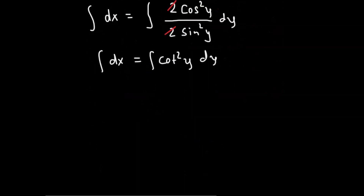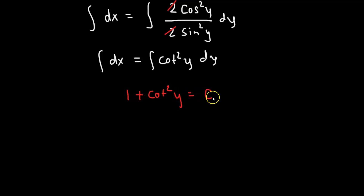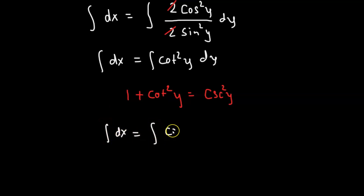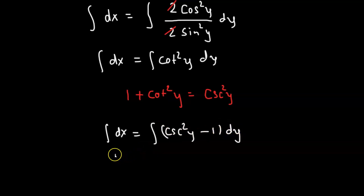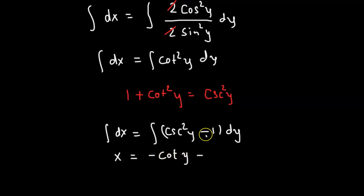Now we use the identity that 1 plus cotangent squared y equals cosecant squared y. So cotangent squared y equals cosecant squared y minus 1. That means we have the integral of dx equals the integral of cosecant squared y minus 1, dy. Integrating both sides gives us x equals negative cotangent of y minus y plus the constant of integration c.